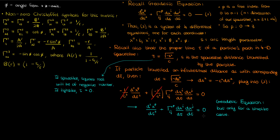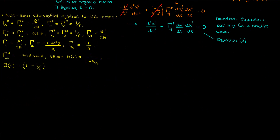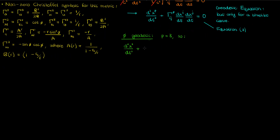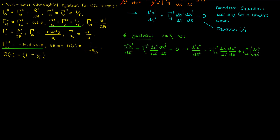I'll call the modified geodesic equation in terms of proper time equation 3. We can now formulate the geodesic equations for each coordinate. We'll start with the angular coordinates, beginning with φ, which corresponds to p = 3. The only nonzero Christoffel symbols with superscript 3 are Γ³₃₁, Γ³₁₃, and Γ³₂₂. Plugging those into the geodesic equation gives the φ geodesic equation.